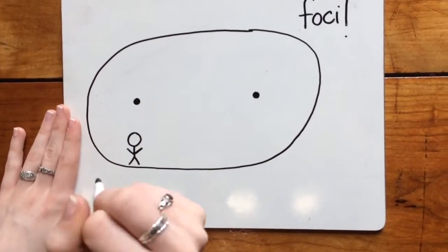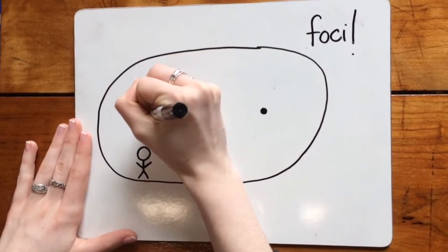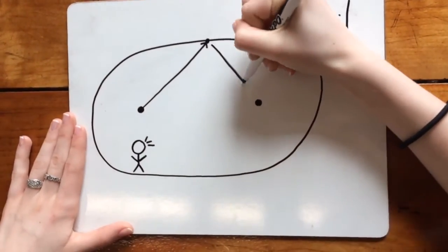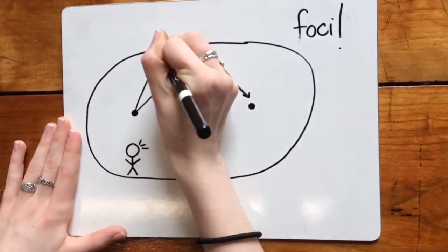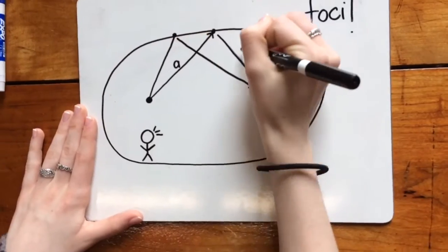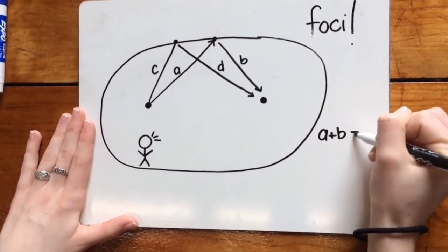Whispering galleries work when one person stands at the focus of the ellipse and whispers. The sound waves they create bounce off the curved walls and ceiling and concentrate at the other focus. This works due to the fact that the sum of the distances from any point to each focus is constant.